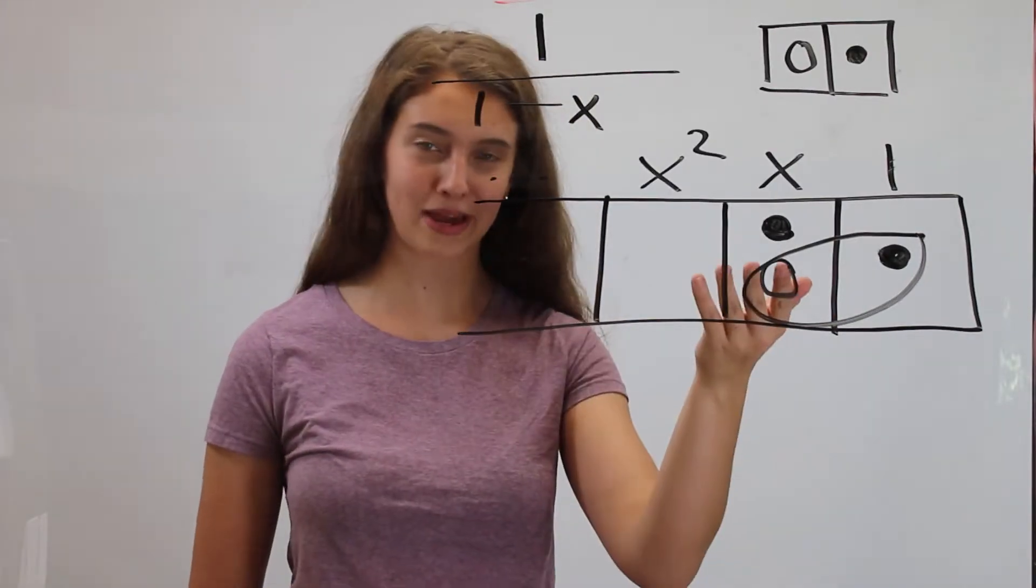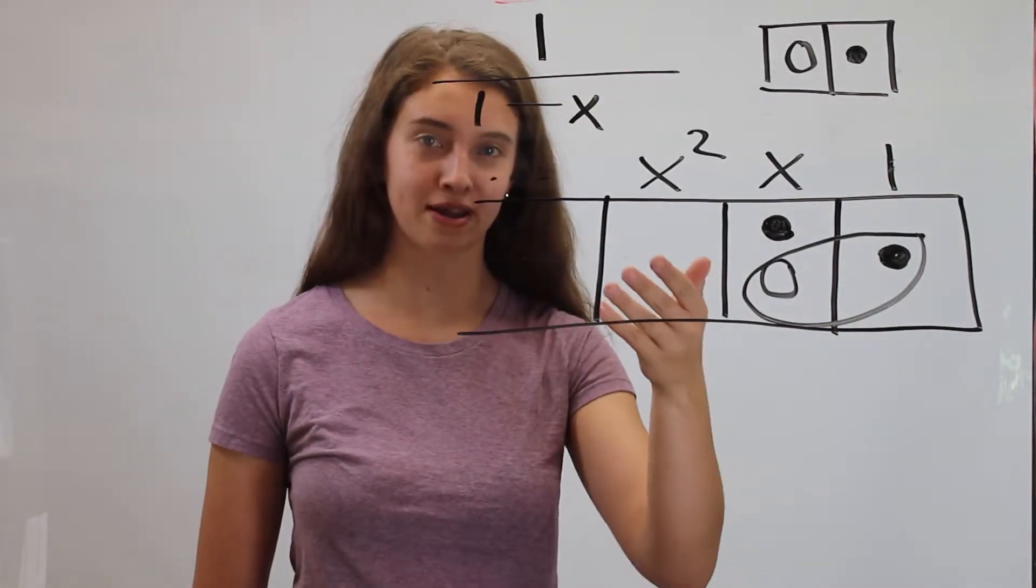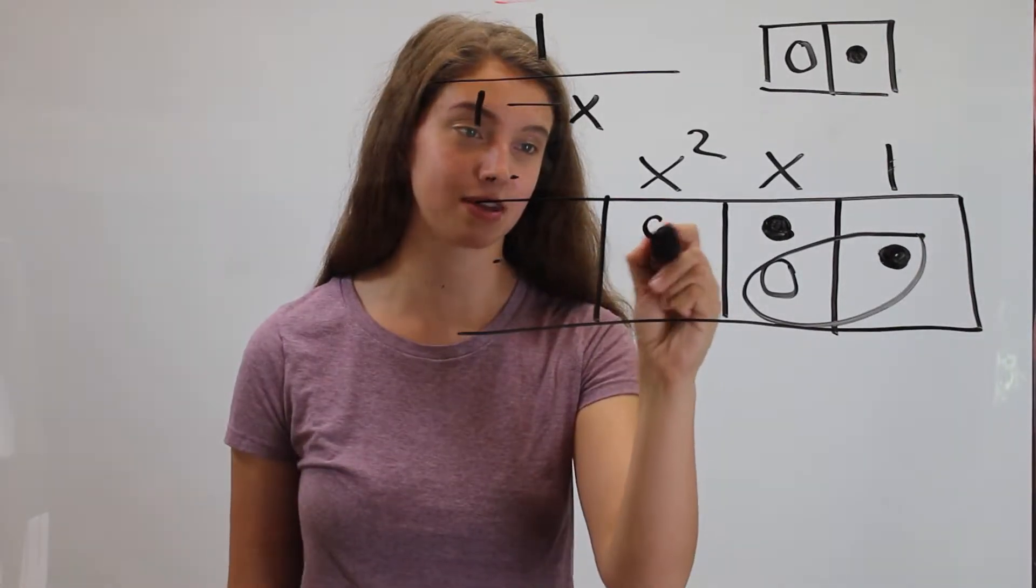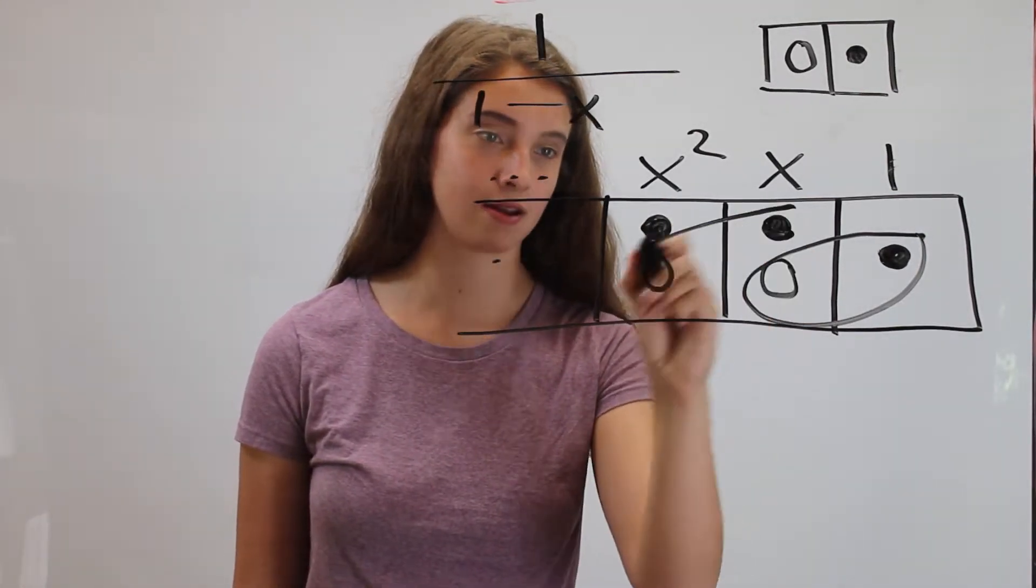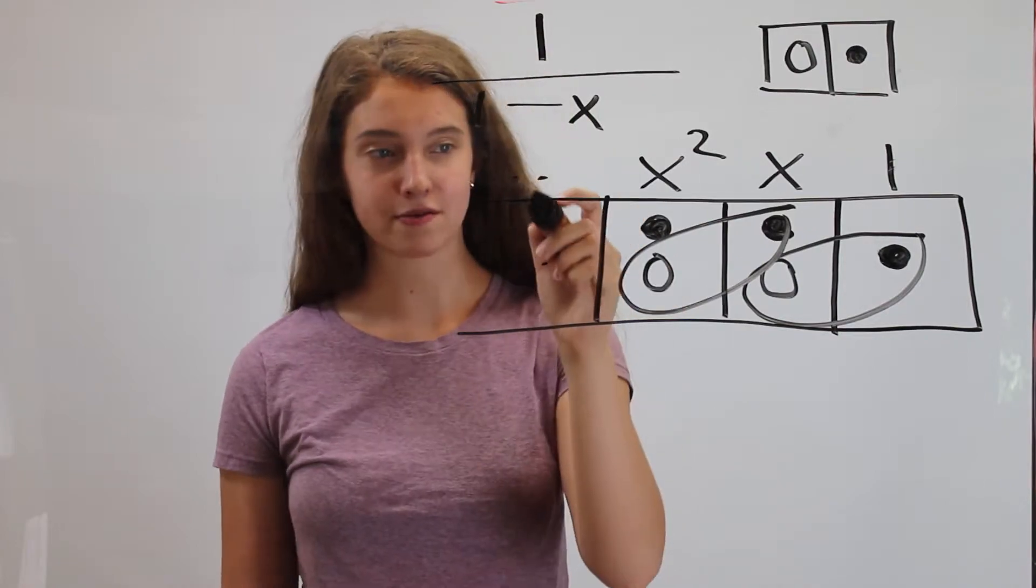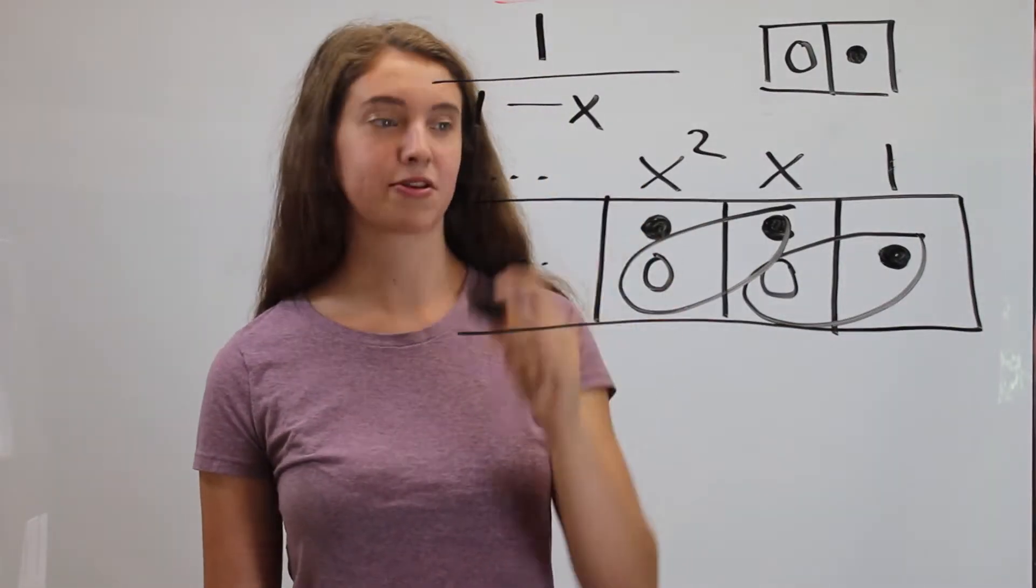But it seems like we have the same problem again, right? Positive dot, no negative dot. We can just keep using the same trick over and over. So add zero again, circle it. You could imagine we'd add two dots again, keep circling it.